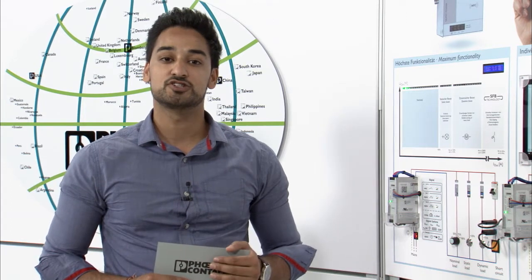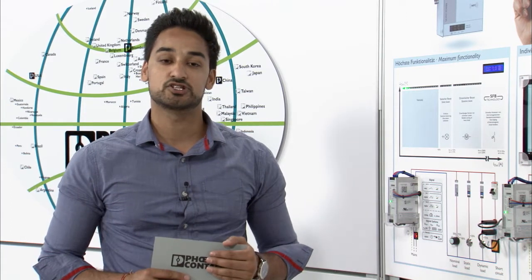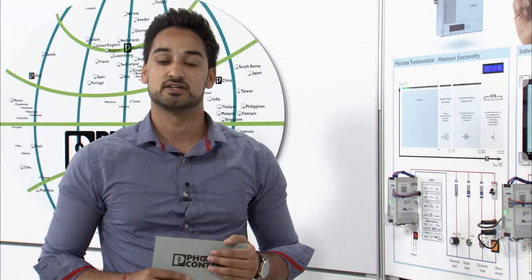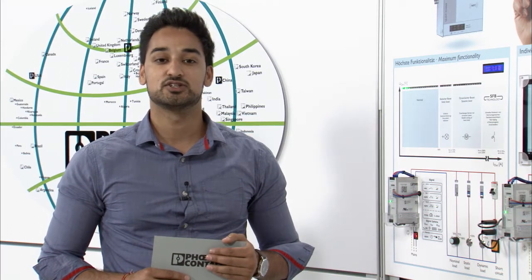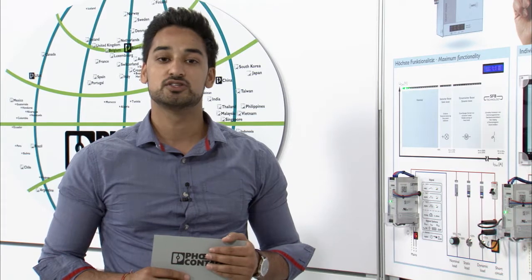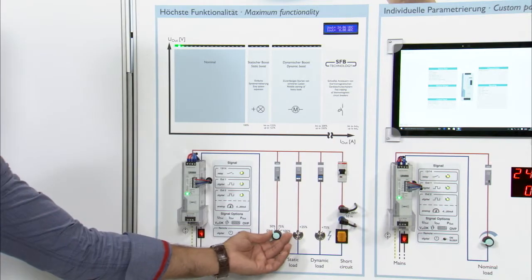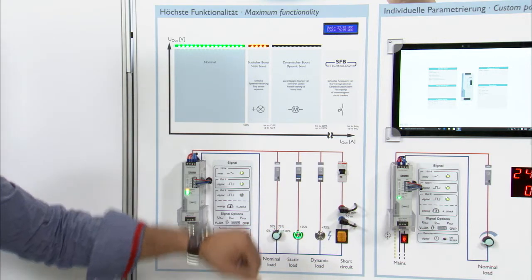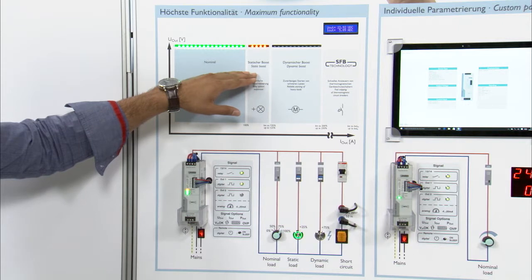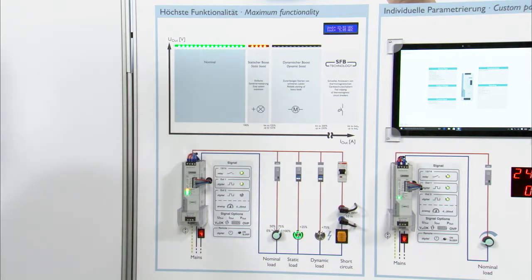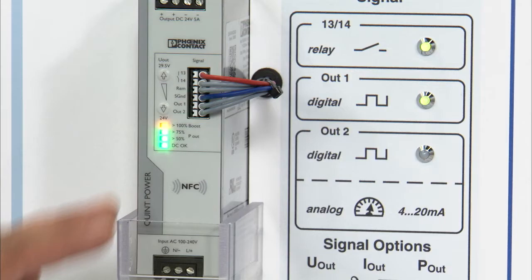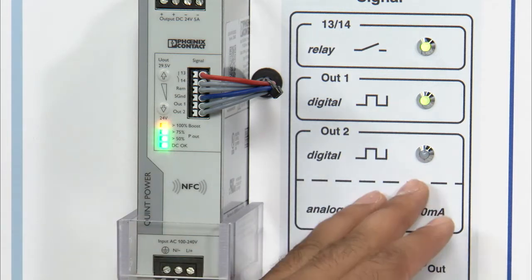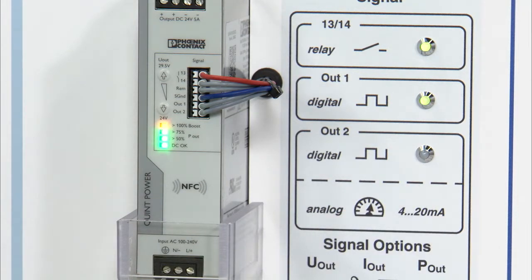The new Quint Power of the 4th generation has an adjustable threshold and gives you a pre-warning to prevent such a case. The default setting of the signal contact Out 2 is to monitor the nominal power. So if you increase the output power and exceed the nominal power due to system expansion, then on the one hand the static boost means the Quint Power will still securely supply your system, and on the other hand the Quint Power will give you a pre-warning that your application has exceeded the limits of nominal power. You can also set a different threshold.